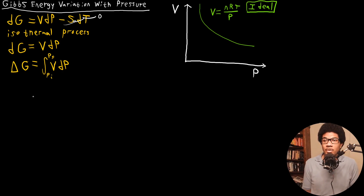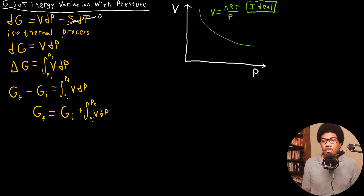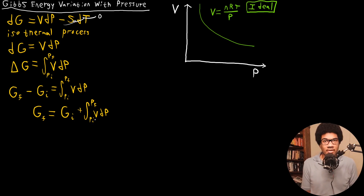We're going to integrate from some initial pressure P_i to some final pressure P_f. Expanding ΔG, we know this is just final minus initial, so we have the final Gibbs energy minus the initial Gibbs energy equal to this integral. If we wanted to isolate the final Gibbs energy — knowing some initial conditions and solving for the final Gibbs energy — we can rearrange algebraically to get the initial Gibbs energy plus this integral. This integral is very important: the initial and final Gibbs energies differ exactly by its evaluation.